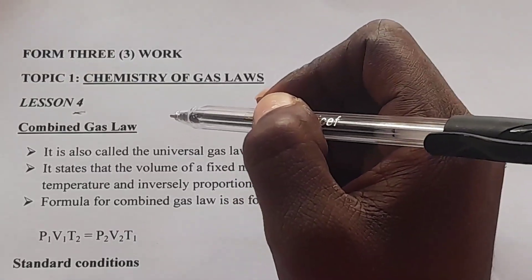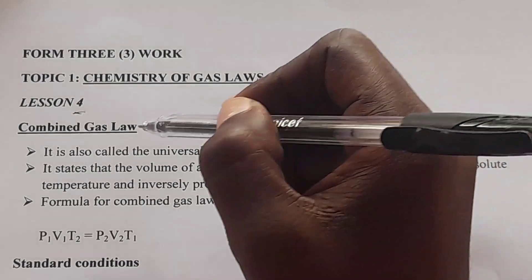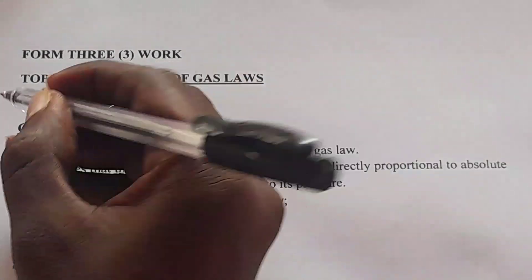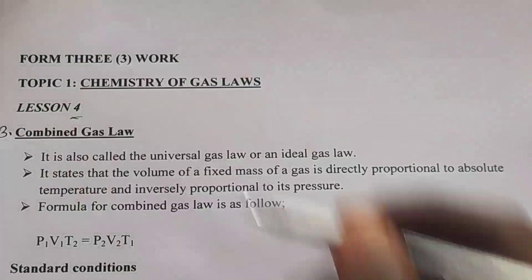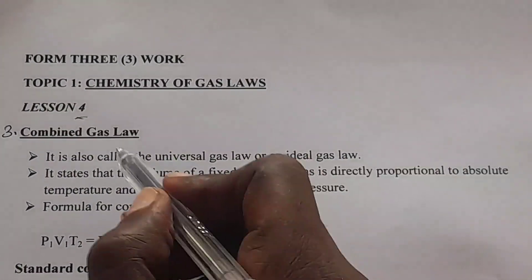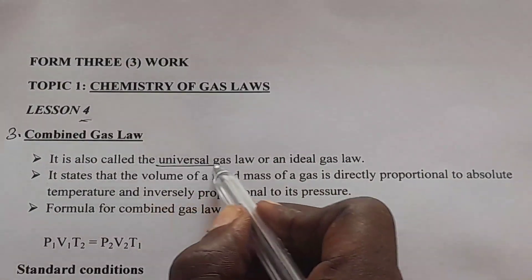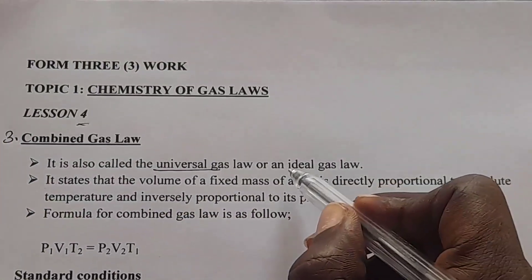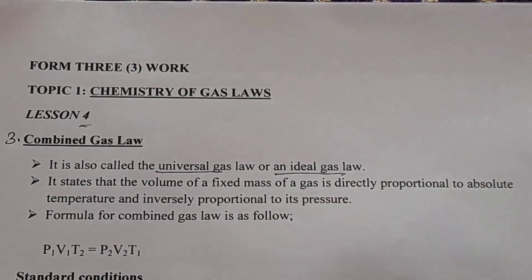Remember, we were having Boyle's law, Charles's law, and next we are dealing with the combined gas law. So this is our law number 3. Combined gas law is also known as the universal gas law or the ideal gas law. That's the other name of combined gas law.